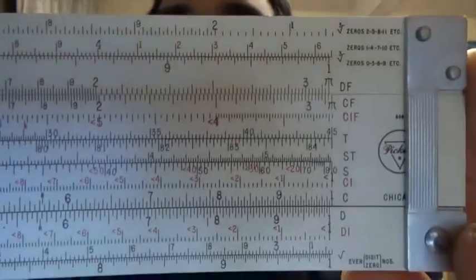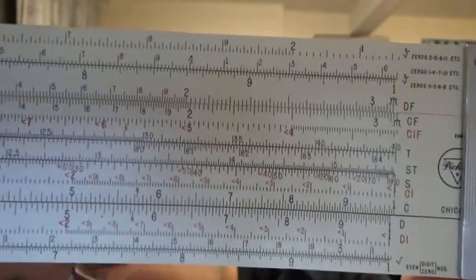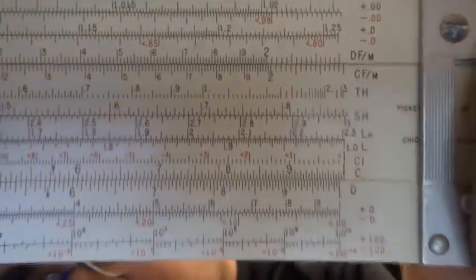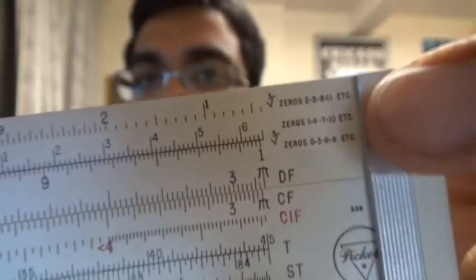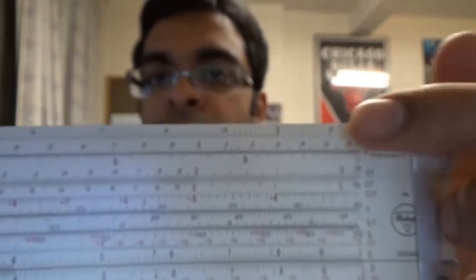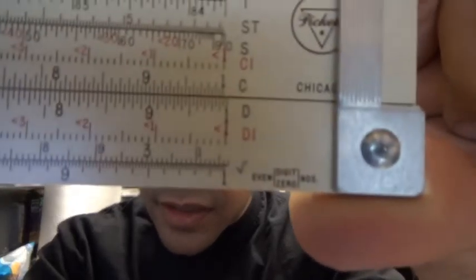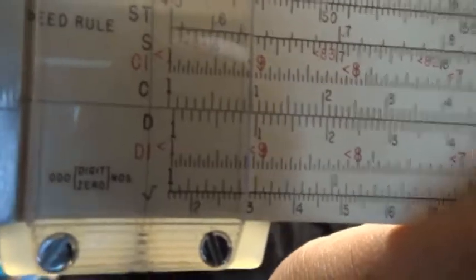The Picket N4-T vector type log log dual base speed rule, as you can see proudly written right there. This rule has 34 scales, as I mentioned before. You can see some of them over there. It is a monster. And it's got little helpful things there to tell you exactly what each scale does. So for example, for the cube root scales, it tells you exactly which sets of values you're supposed to use by the number of zeros, which one of these three little divisions you're supposed to use. And for the square root, it has it on there as well. On one side, even number of zeros, and on the other side, an odd number of zeros for the top and for the bottom, respectively.